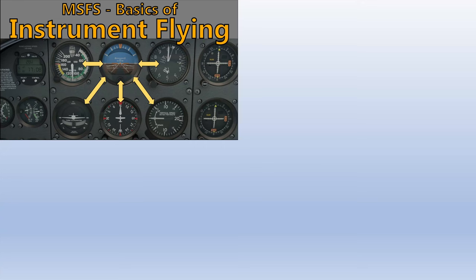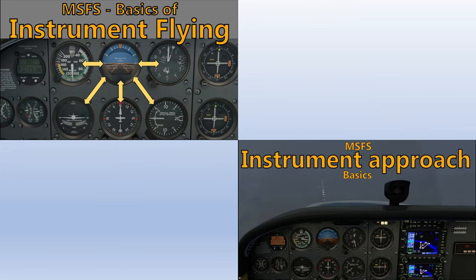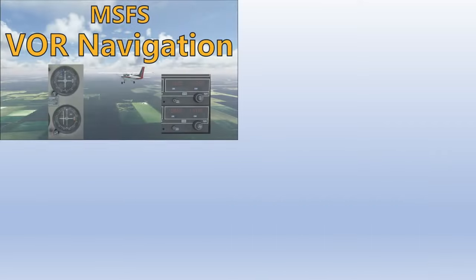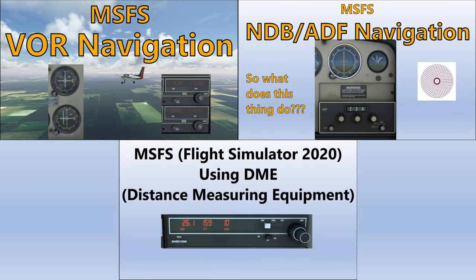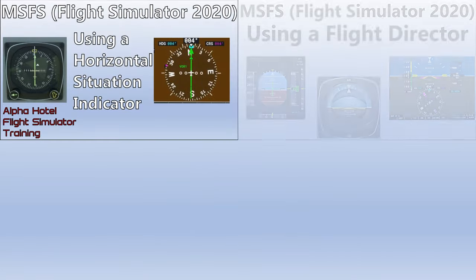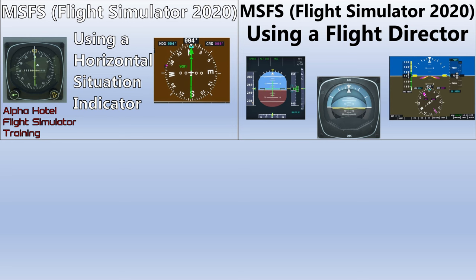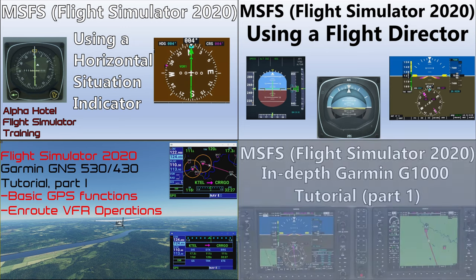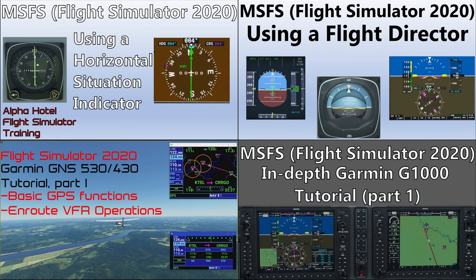Before we start, it's very important to be familiar with the basics of instrument flying as well as having a fundamental grasp of how instrument approaches work and how to read instrument approach charts. It's also a good idea to be familiar with VOR and NDB navigation, how to use DME, how an HSI and flight director work, and a working knowledge of the GNS 530, 430, or G1000. I'll leave links to all those videos plus a link to the entire instrument training series in this video's description.